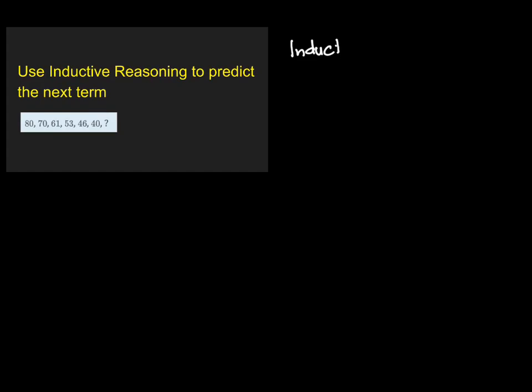Use inductive reasoning to predict the next term. So you have a sequence which is 80, 70, 61, 53, 46, 40. We need to find the next term in this sequence.